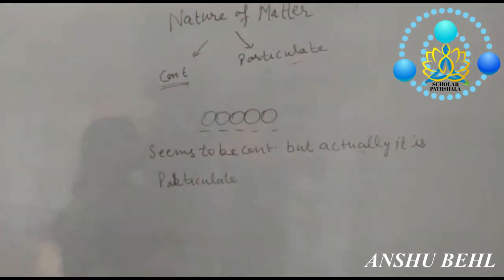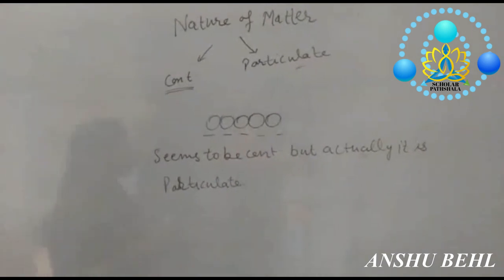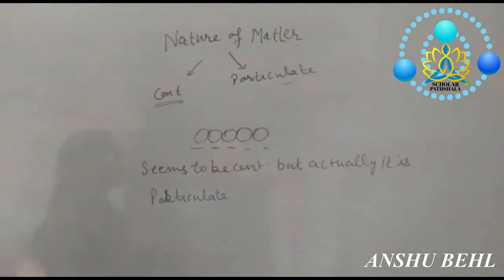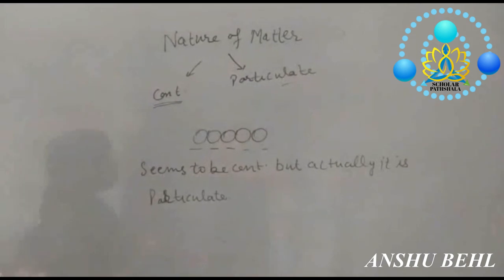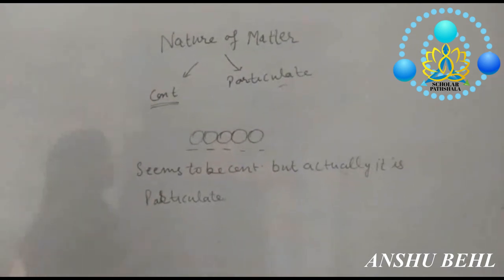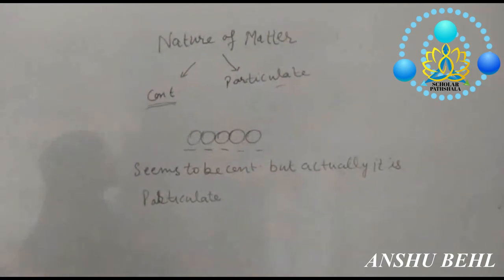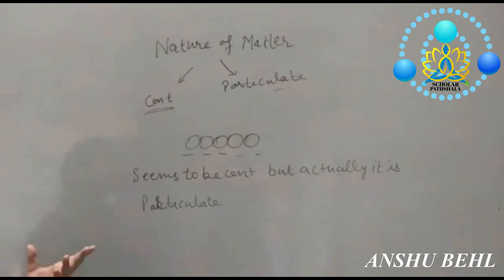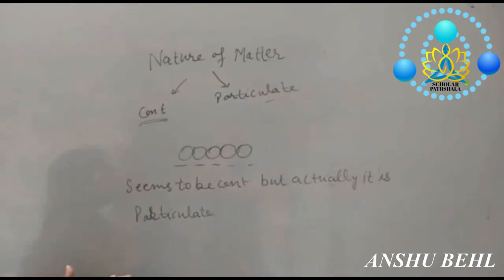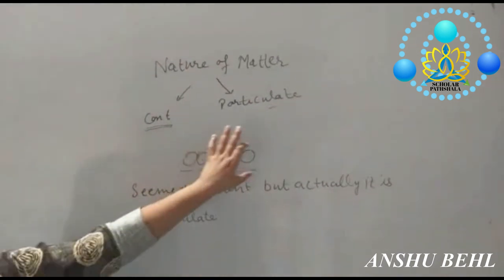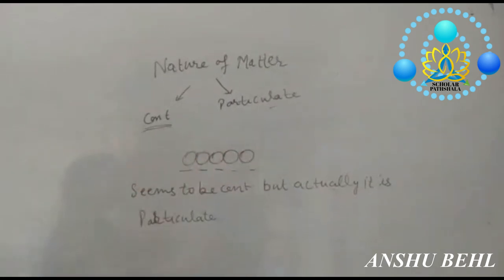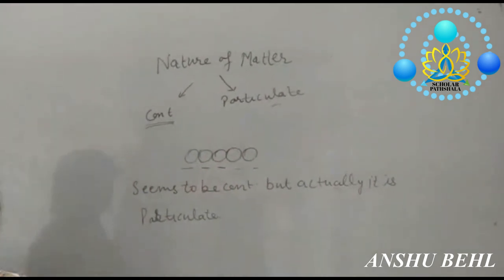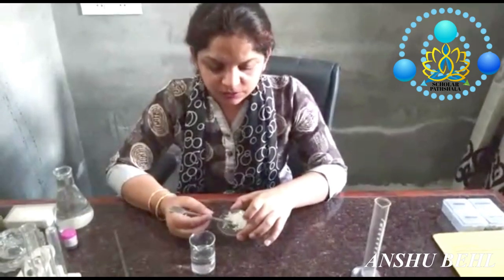If you take a piece of wood, it seems to be continuous, but it can be broken into sawdust. As it breaks into sawdust, it was made up of sawdust all along. So we can see that a piece of wood is also made up of tiny particles of wood, and therefore its nature is particulate.